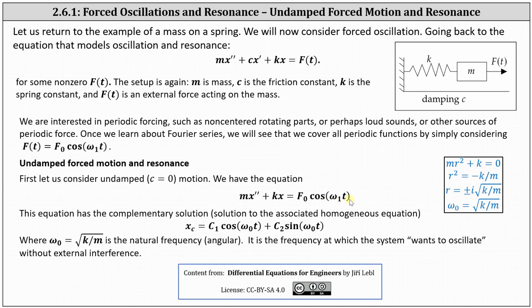Recall the general solution is equal to the sum of the complementary solution and a particular solution. The complementary solution x_c is the solution to the associated homogeneous equation. The characteristic equation is mr² + k = 0, giving us r = ±i√(k/m). Because we have two complex solutions, the complementary solution has the form shown, where ω₀ = √(k/m). ω₀ is called the natural frequency — it is the frequency at which the system wants to oscillate without external interference.